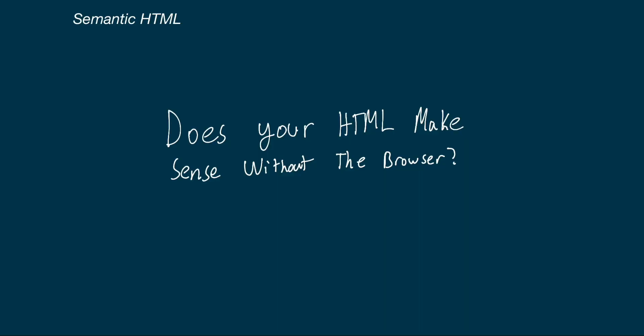Hey everybody, welcome back to Frontend Expert. In this video, we'll be talking about semantic HTML. The question we're really trying to answer is: does your HTML file make sense without the browser? There are tons of circumstances where somebody might need to see your HTML code or interact with it but can't visually see the browser output. We need to make sure the code we write is semantically correct. For example, when somebody's using a screen reader, they won't be able to visually see how the browser displays things, so the HTML must be semantically correct for the screen reader to know what to tell that user.